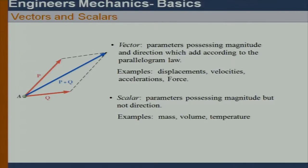Vectors possess both magnitude and direction, and should be added according to the parallelogram law. If we have two vectors P and Q, the resultant is the diagonal of the parallelogram they form. Scalars, on the other hand, have only magnitude and no direction.